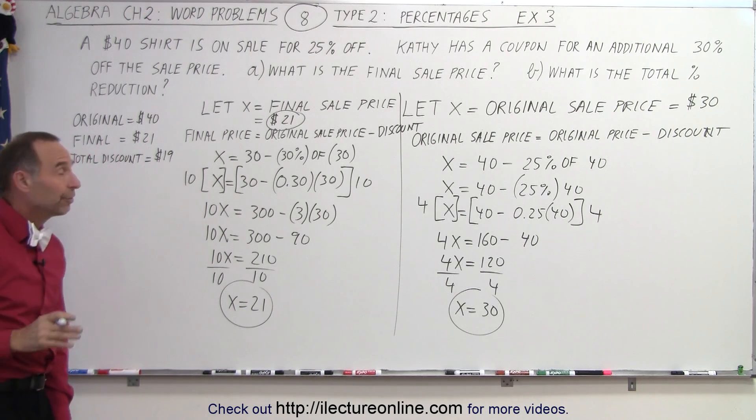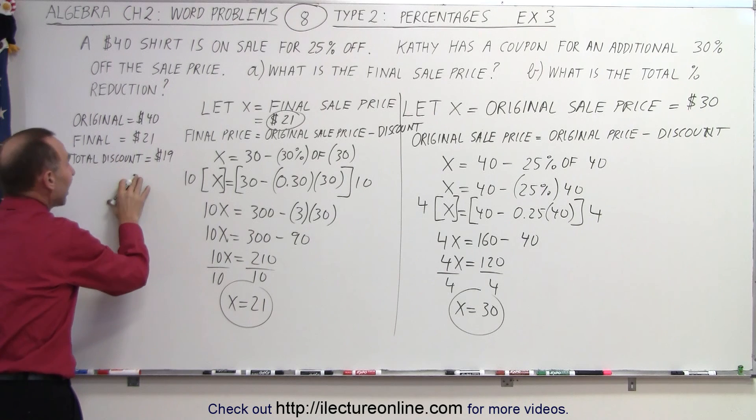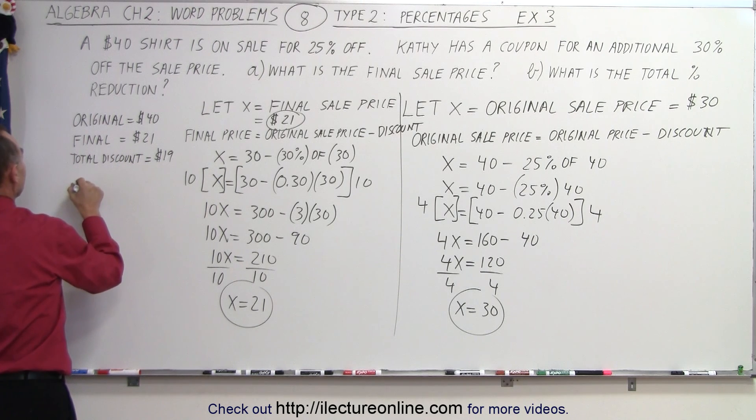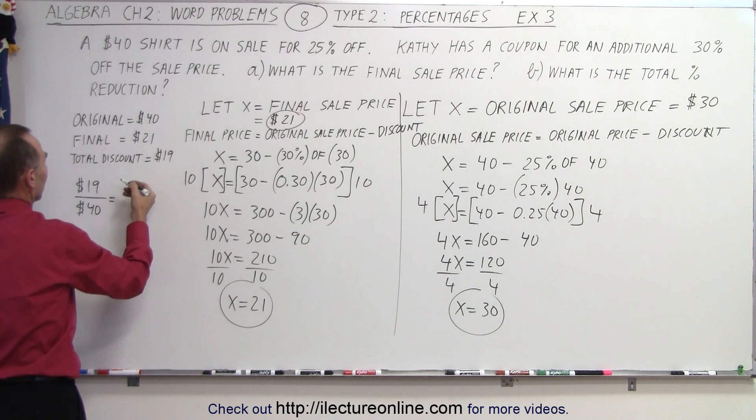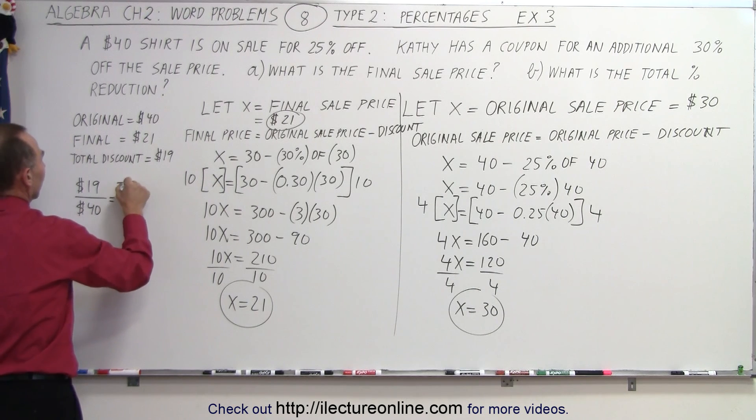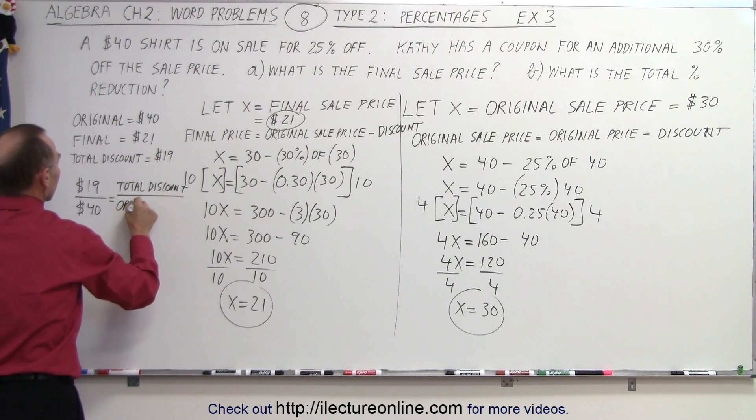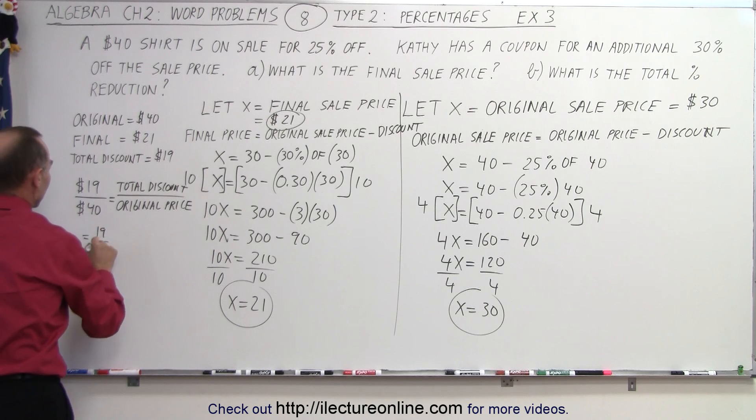So if we divide the total discount by the original price, we get in percent the total discount. So we take $19, which is the discount, and divide by the original price, which is $40. That gives us, again, we'll write it out. This is the total discount divided by the original price and that would be equal to 19 divided by 40.